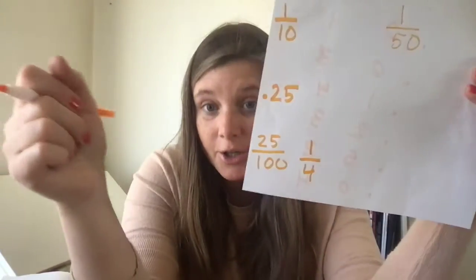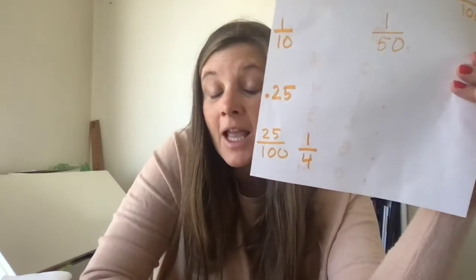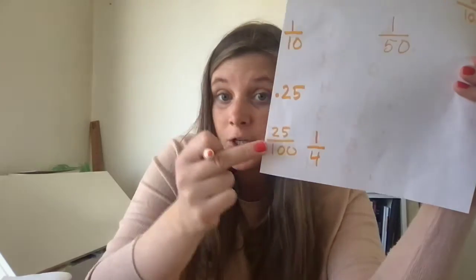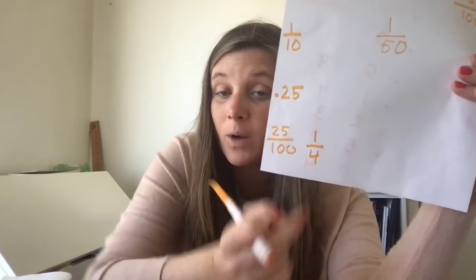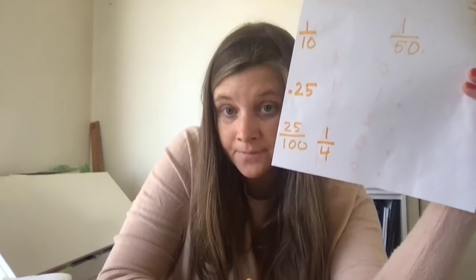So on a new index card, write one-fourth. And your pile of equivalent things is 0.25, 25 over 100, and one-fourth. So those are all equivalent, so put those in a pile.